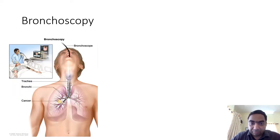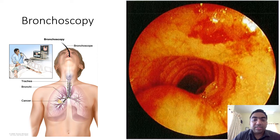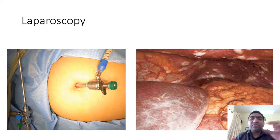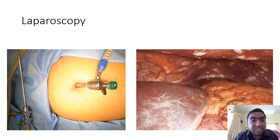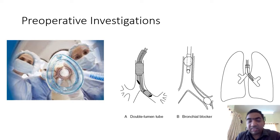Bronchoscopy is sometimes used to identify infiltration into the trachea — we can see the tracheal rings and any esophageal tumor infiltration towards the trachea. Laparoscopy is used preoperatively because diffuse peritoneal metastasis may be missed on CT scan; a preoperative laparoscopy is helpful in identifying peritoneal metastasis. Together, all these investigations help confirm the T, N, and M staging of esophageal cancer.